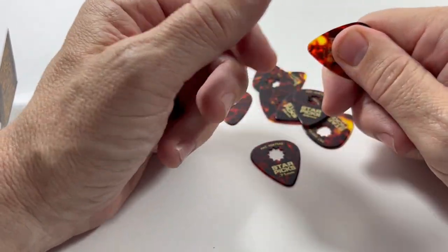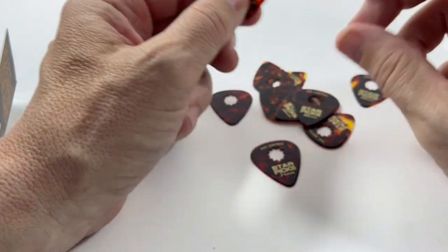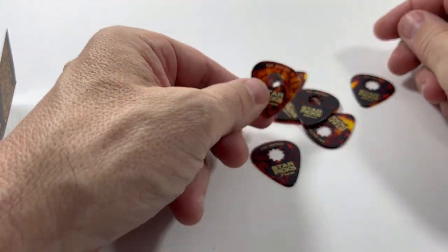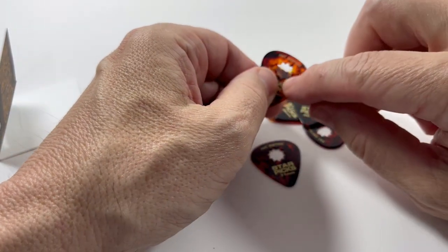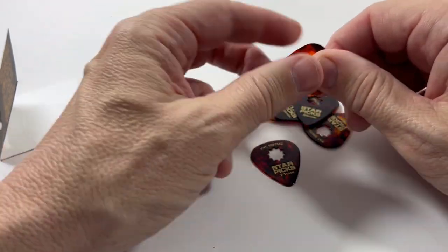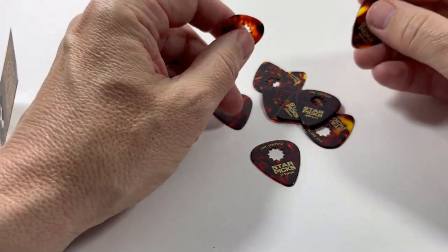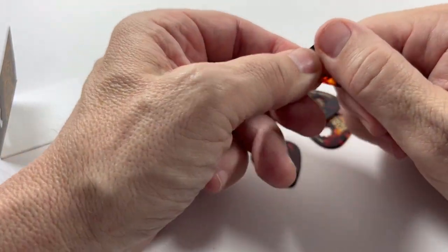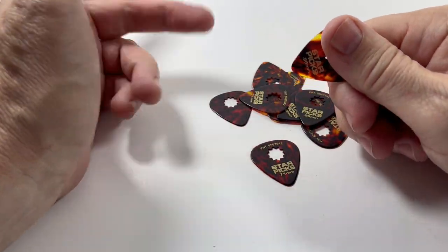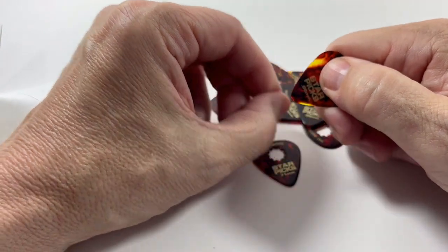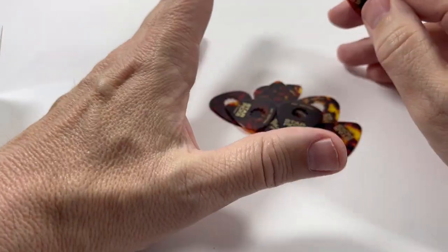One thing for me is that I tend to go a little heavier on these. This does change the integrity of the pick a little bit, so if you're normally a medium pick, I'd go up to like a 0.96 millimeter, or if you're looking at the Tortex ones, one millimeter.